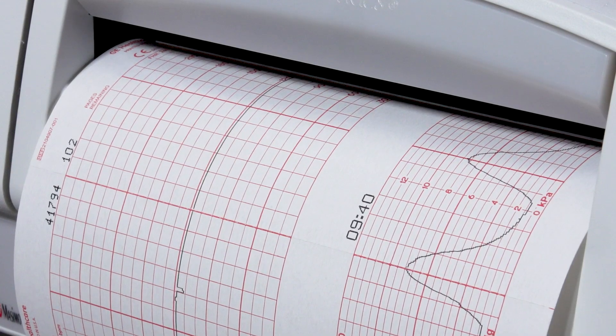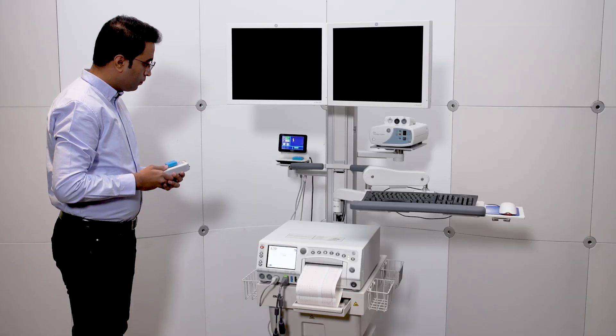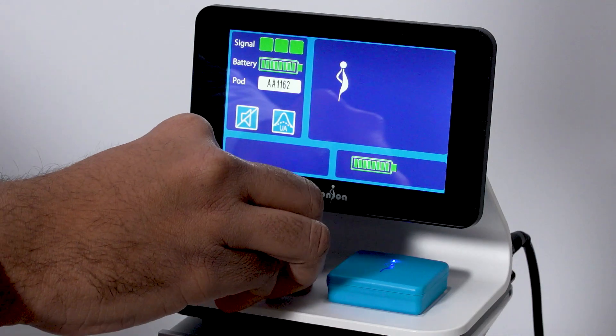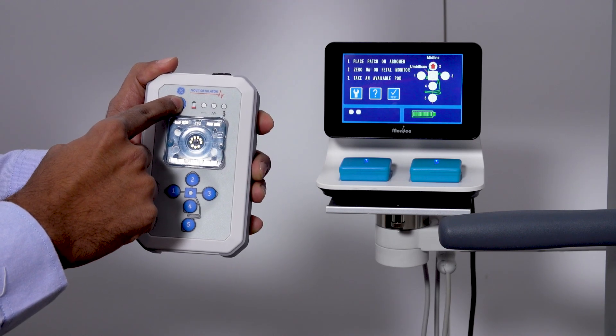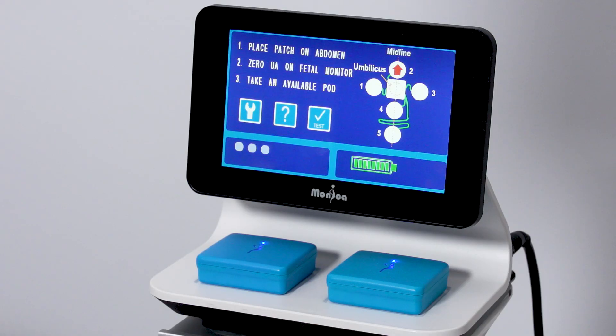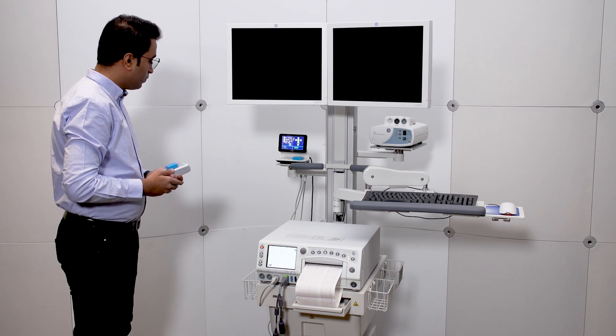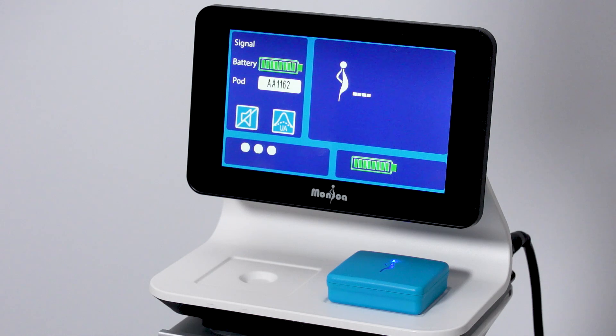And the strip can be compared as well. We will now show demo mode. Restart the simulator again by placing the pod back on the interface. Change the mode to demo. And then replace the pod on the simulator pod clip once the battery indicator appears on the Novi screen.